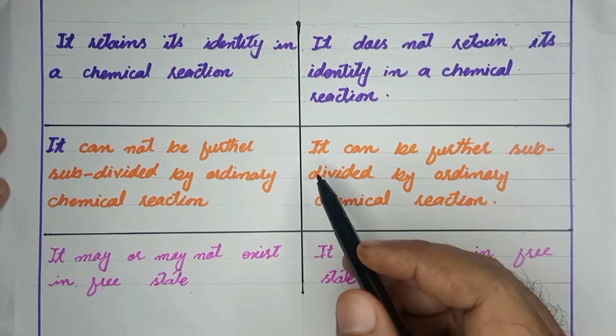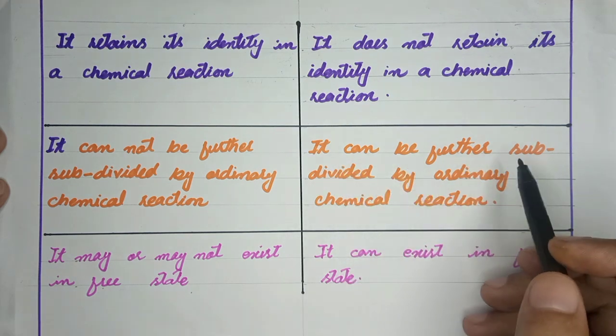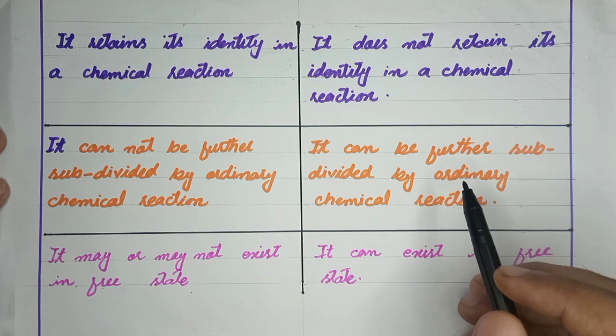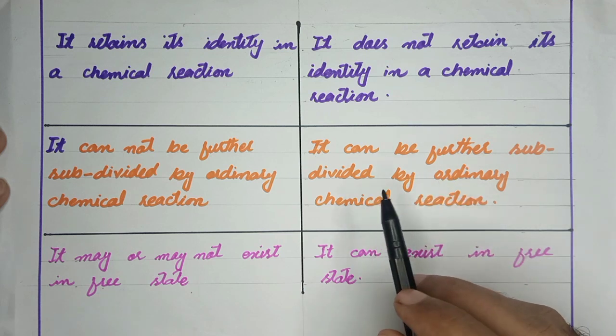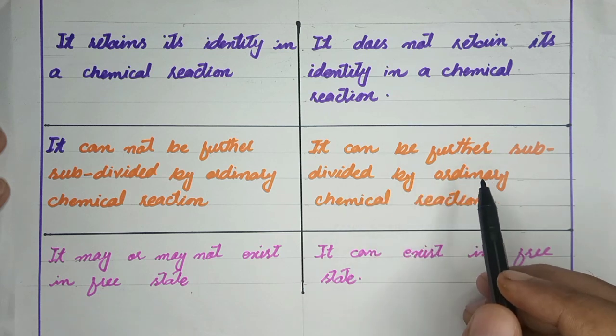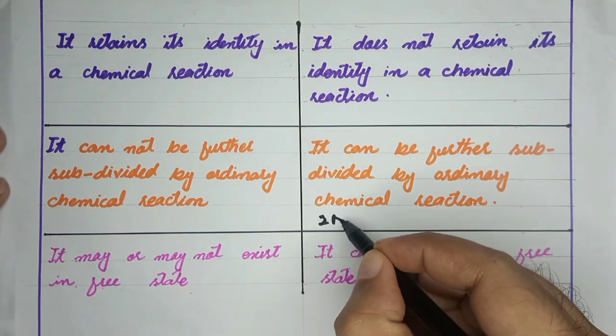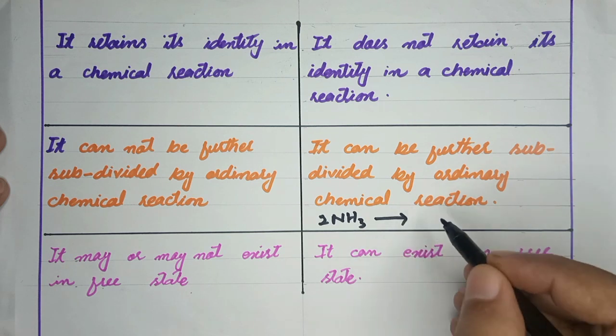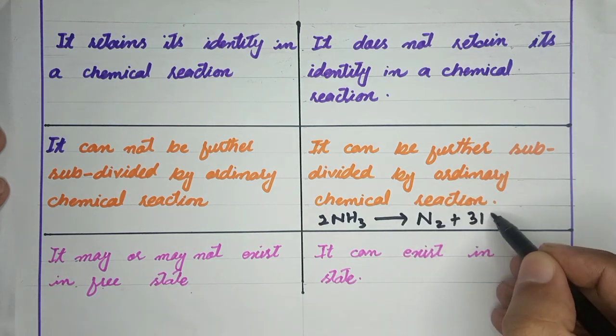The molecule can be further subdivided by ordinary chemical reaction. Ammonia, if you have suitable conditions, can be subdivided into nitrogen and hydrogen.